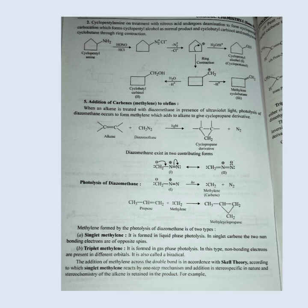Cyclopentylamine on treatment with nitrous acid undergoes deamination to form cyclopentyl carbocation, which forms cyclopentyl alcohol as the normal product, and cyclobutylcarbinol and methylenecyclobutane through ring contraction.